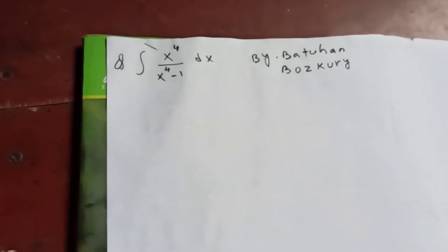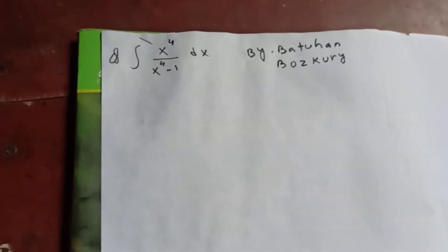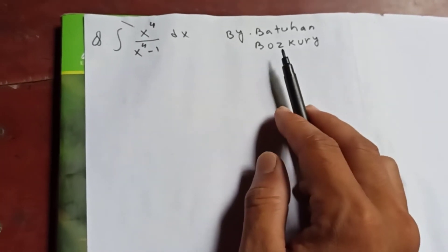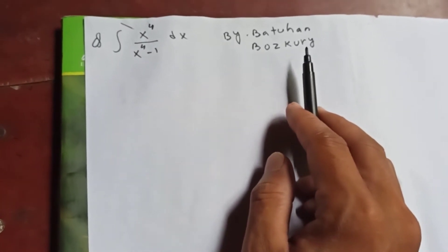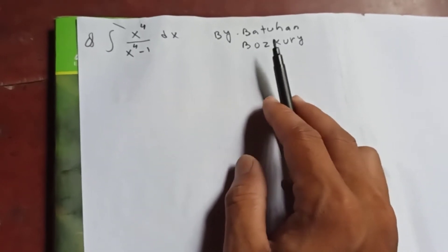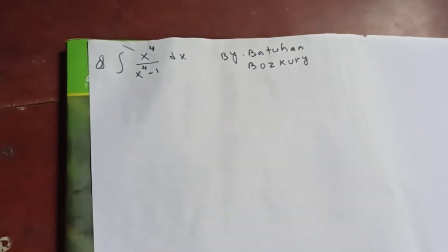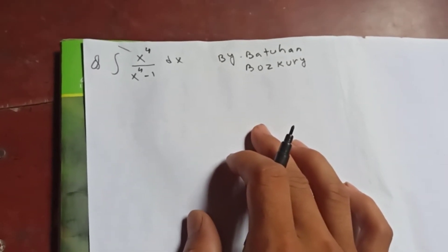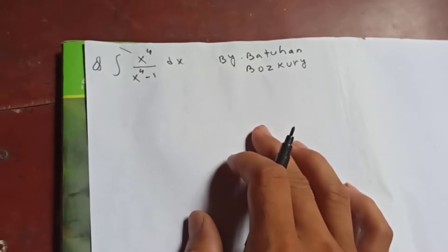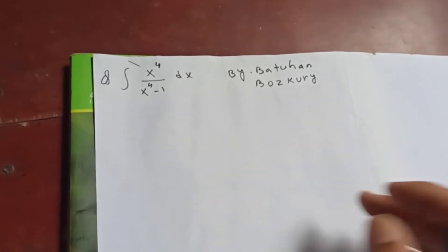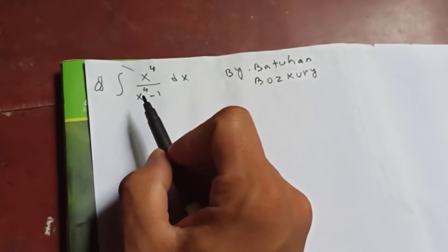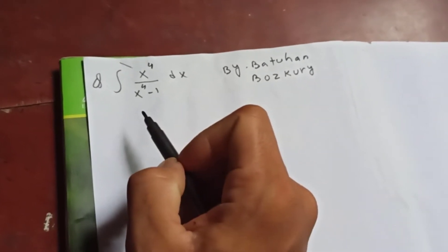So this equation was proposed by that viewer, and I recommend we integrate this one. So friends, this is the answer to your question. Let's start: the integral of x to the 4 over x to the 4 minus 1, dx.